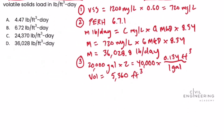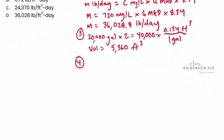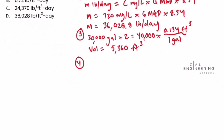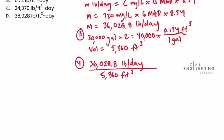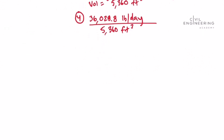Finally, in step four, we calculate the volatile suspended solids load. We take the mass from step two — 36,028.8 pounds per day — and divide it by the volume from step three — 5,360 cubic feet. Working through the math, we arrive at an answer of 6.72 pounds per foot cubed day.